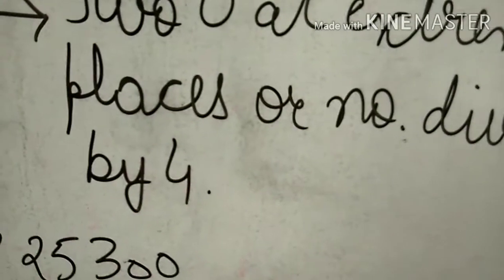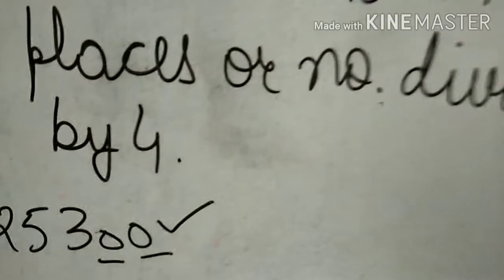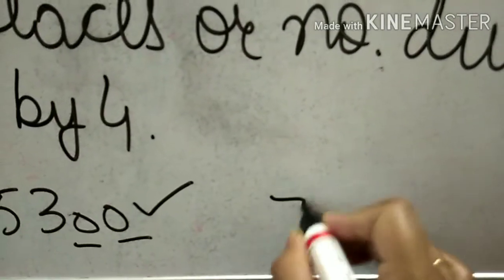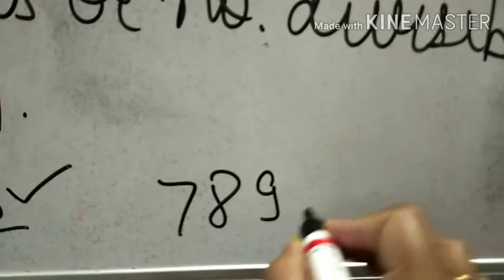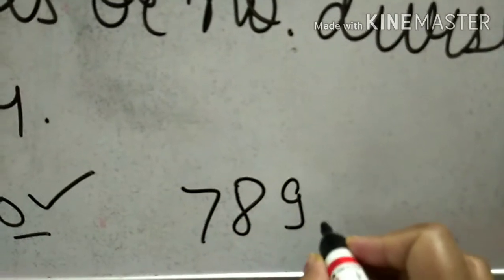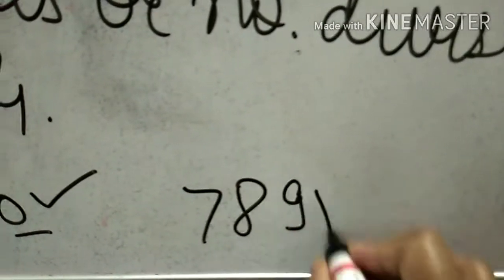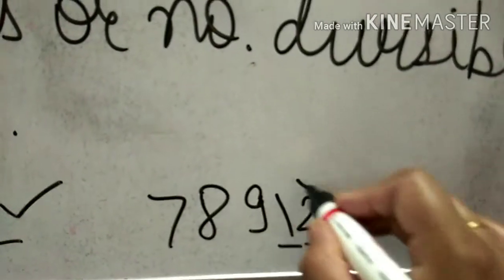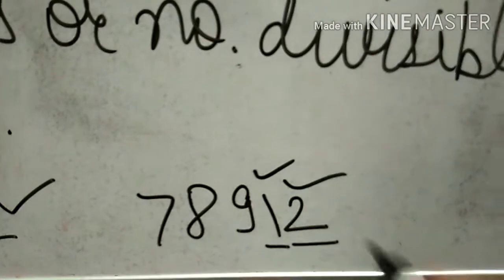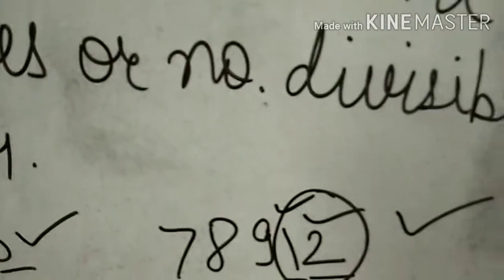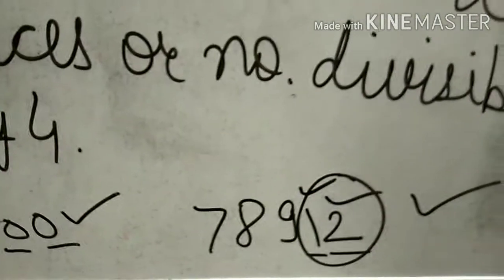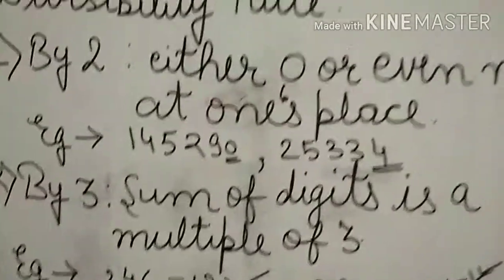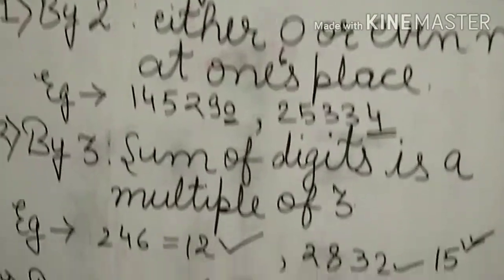Or if like 78912, we see the extreme right two numbers at one's and ten's place is 12, which is divisible by four. So this number is also divisible by four. Like this, we can identify the divisibility by 2, 3, and 4.